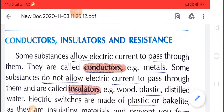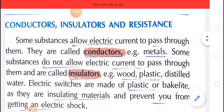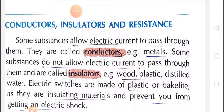Conductors are those substances or materials which allow electric current to pass through them. For example, metals. Insulators are those substances which do not allow electric current to pass through them. For example, wood, plastic, and distilled water.